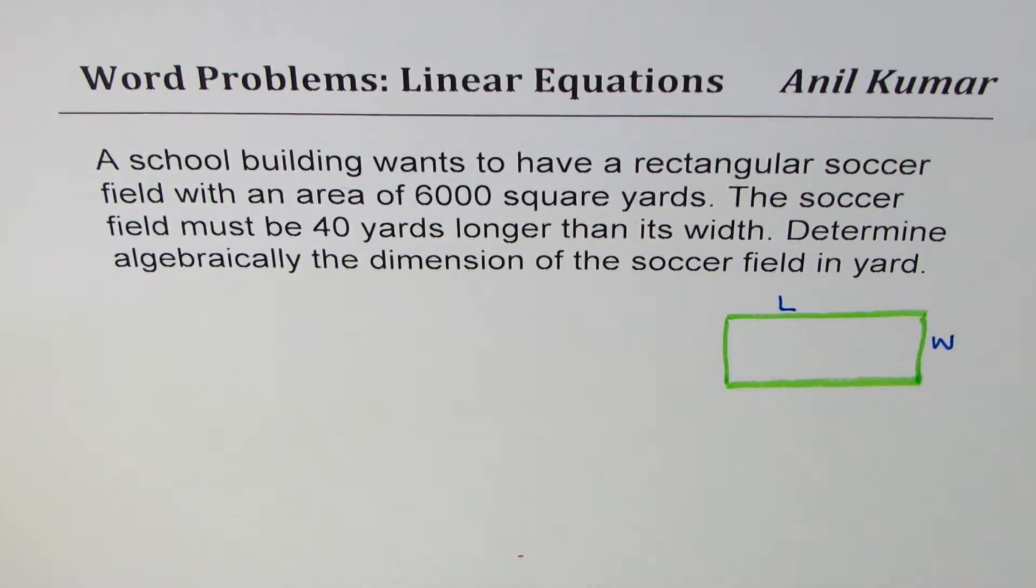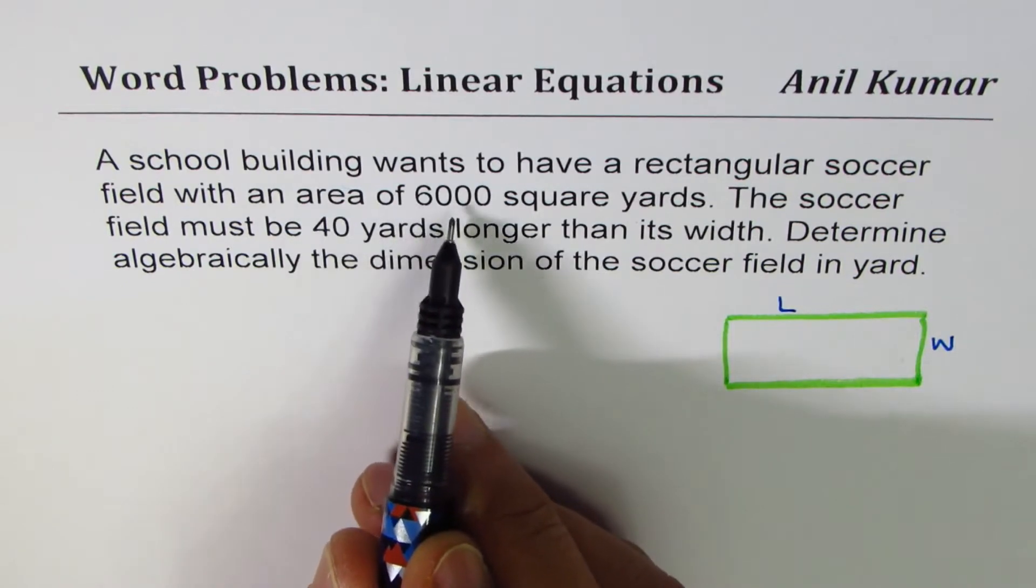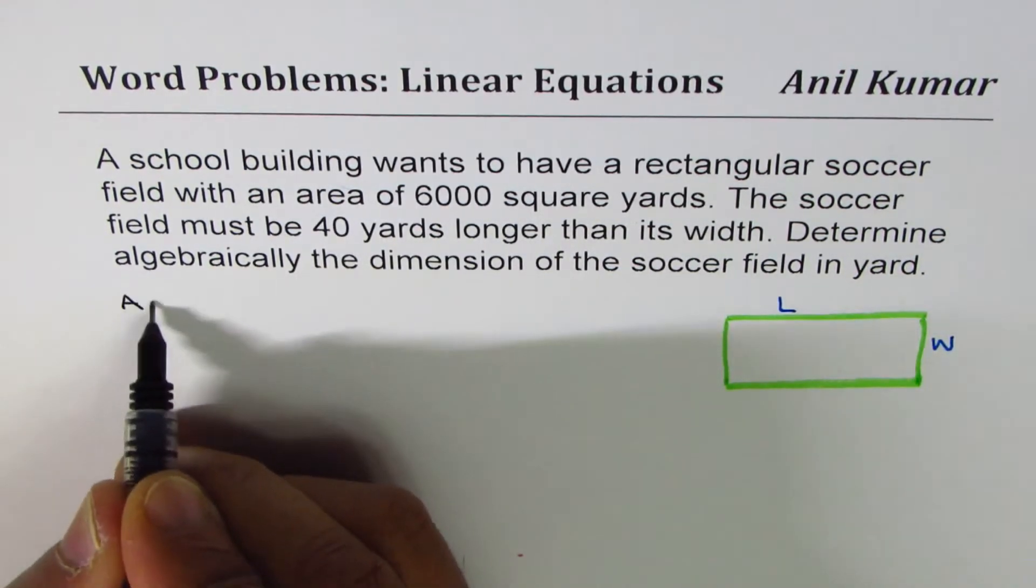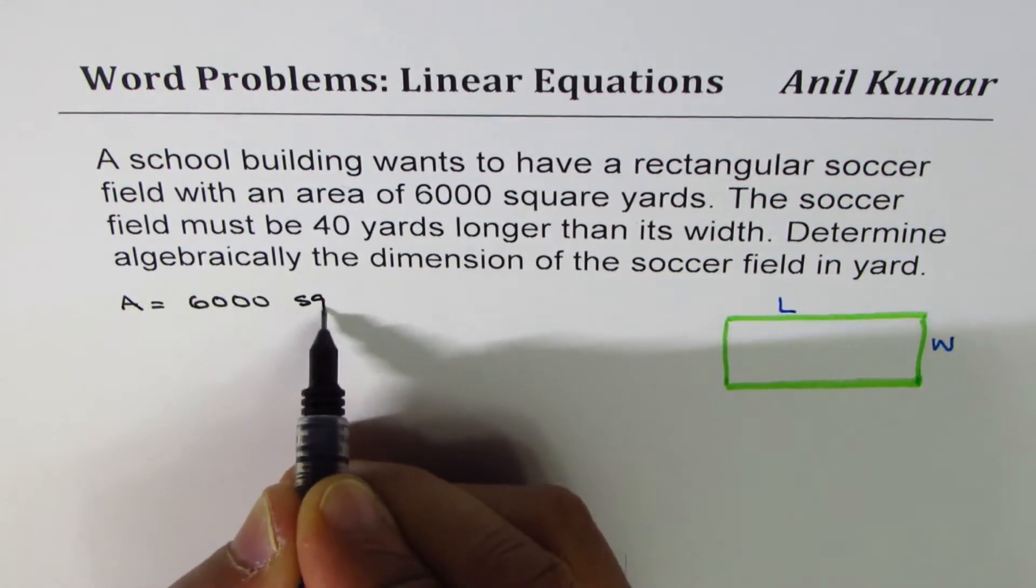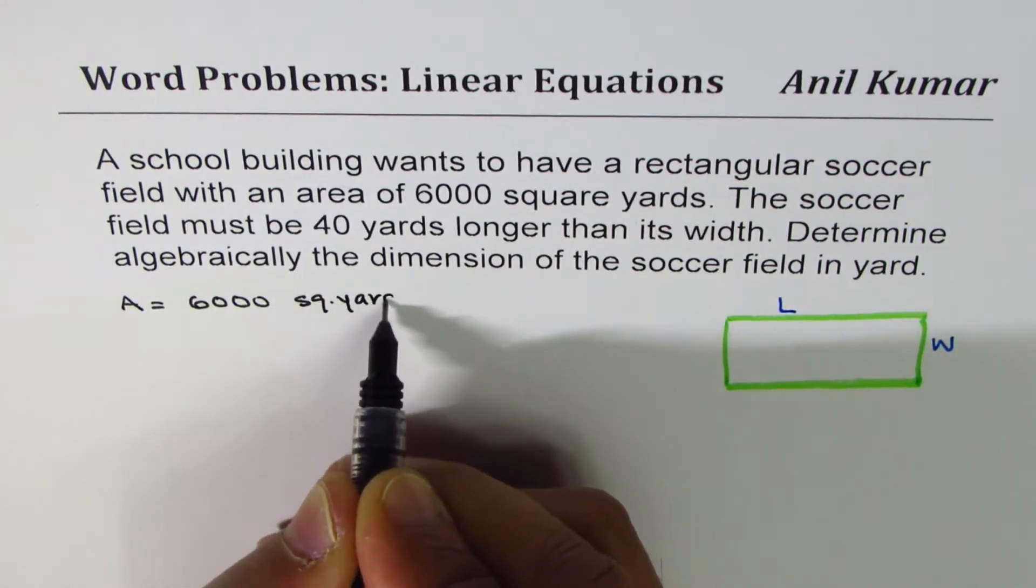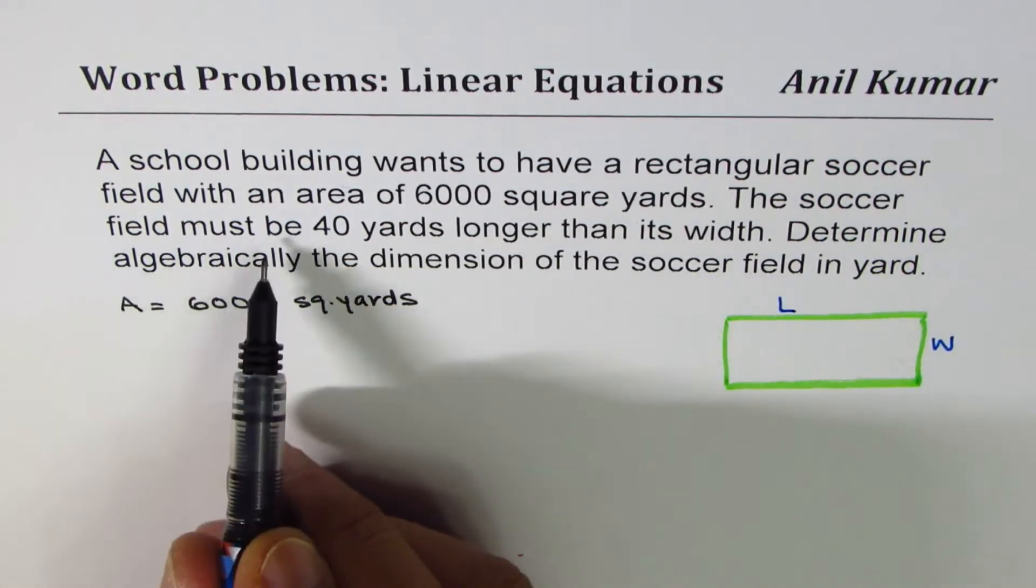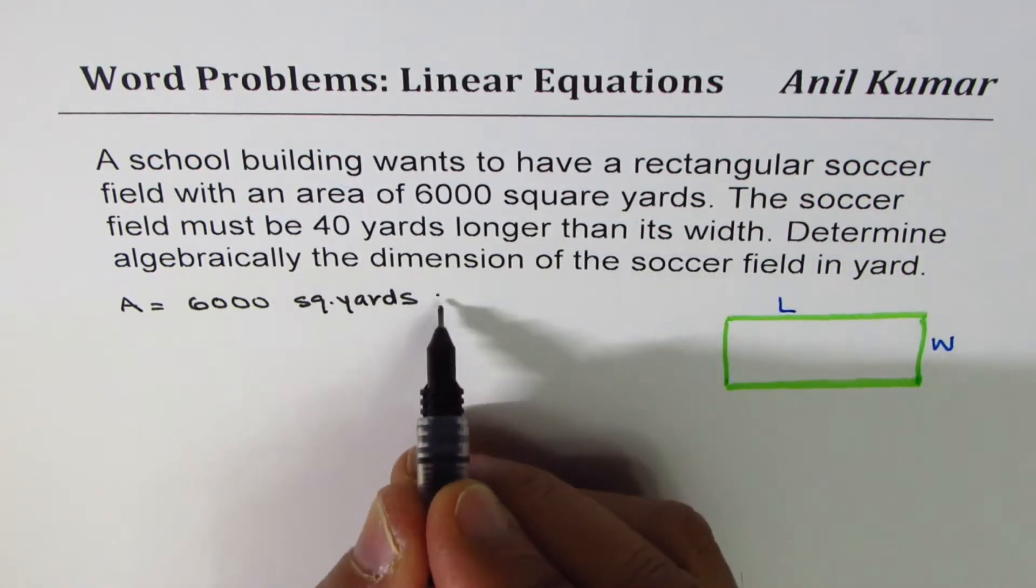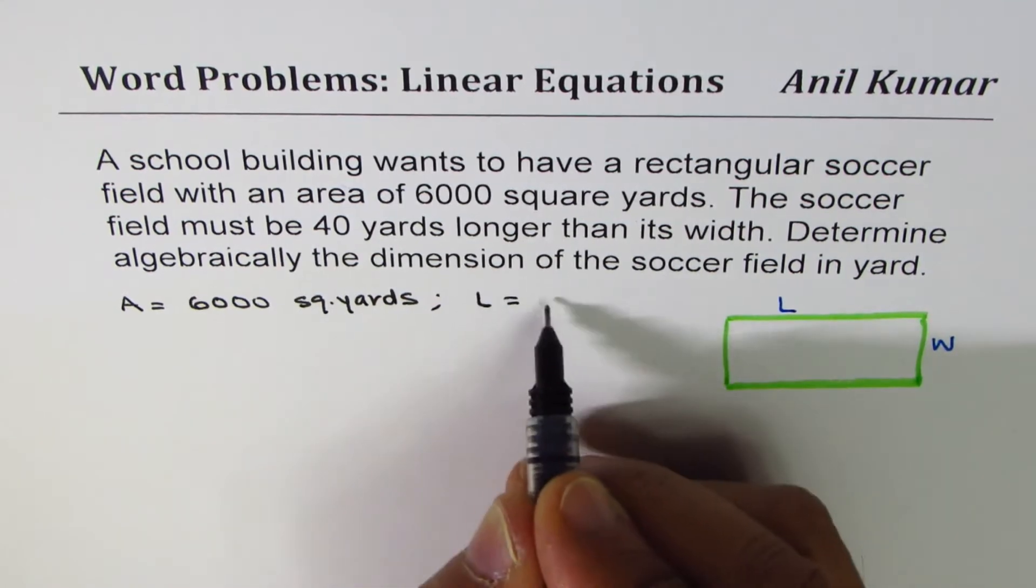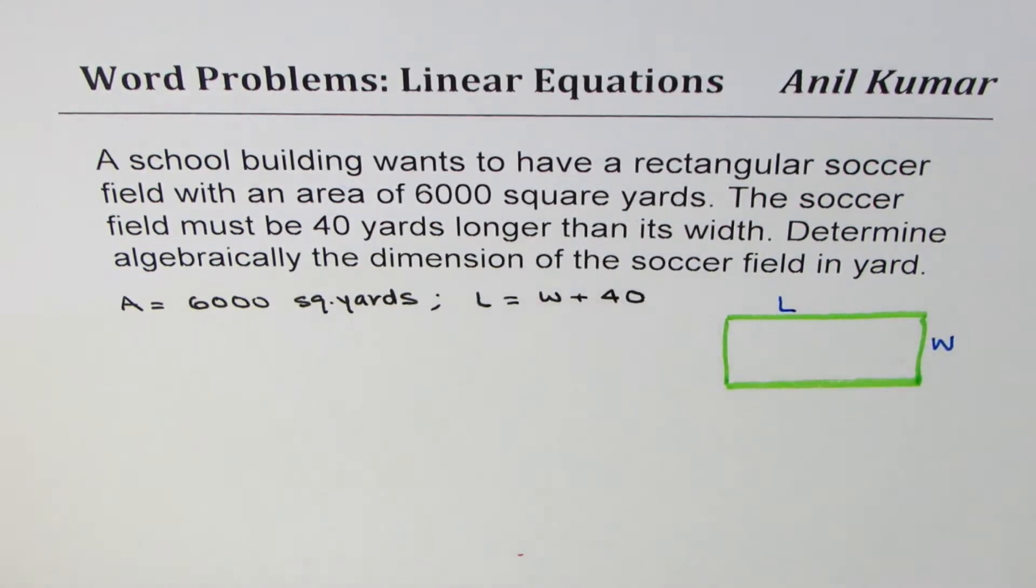We are given area of 6,000 square yards, so let's write area equals to 6,000 square yards. We are also given that the soccer field must be 40 yards longer than its width. That means length should be width plus 40. So these two conditions are given to us.